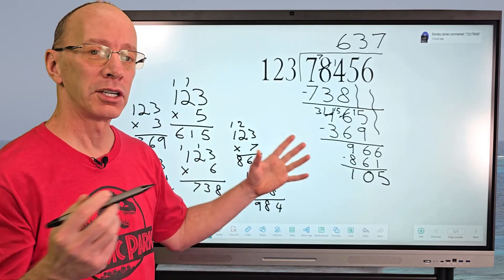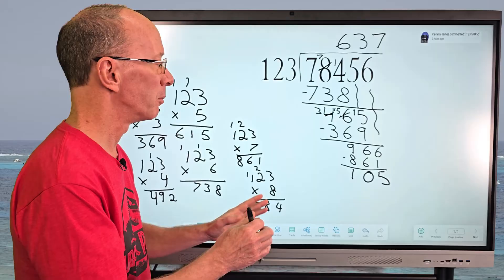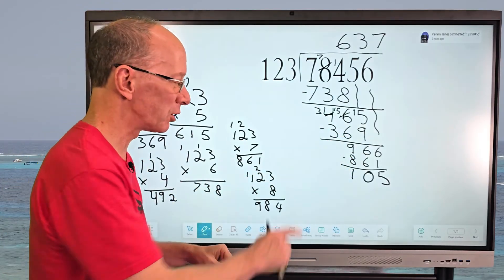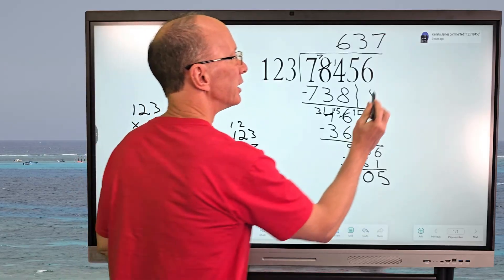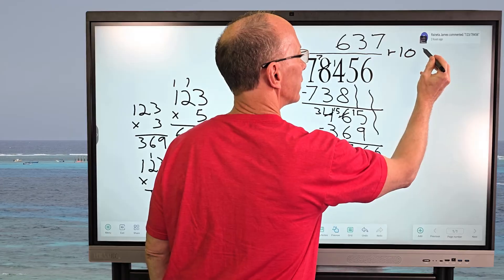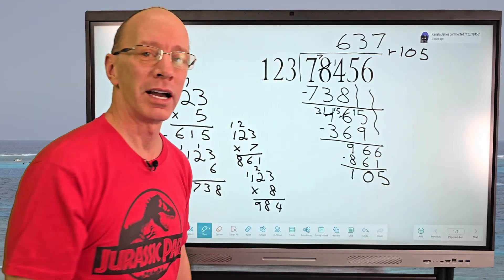And if you wanted to turn it into a decimal, then I think it would take a little bit longer. So we're just going to keep it as a remainder. So let me go ahead and put the R right here. Remainder 105. All right.